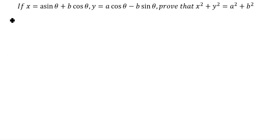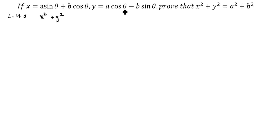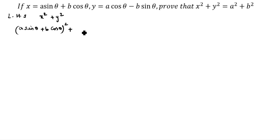Now we will take LHS equal to RHS. The LHS is given as x square plus y square. The x value is given as a sin theta plus b cos theta, and the y value is given as a cos theta minus b sin theta. So first we take x square, which is (a sin theta plus b cos theta) whole square, and y square, which is (a cos theta minus b sin theta) whole square.